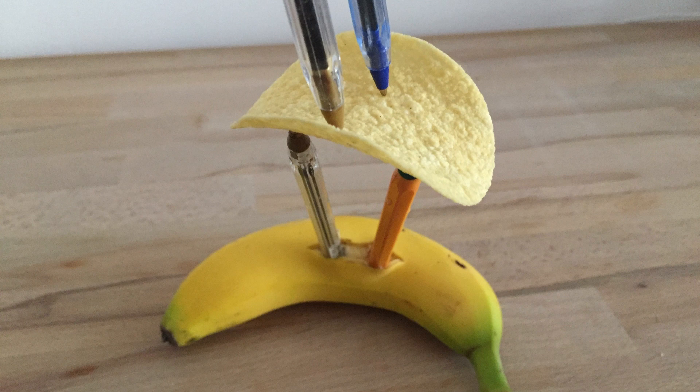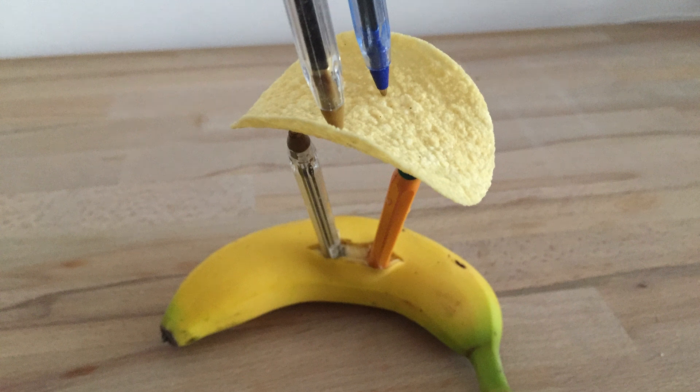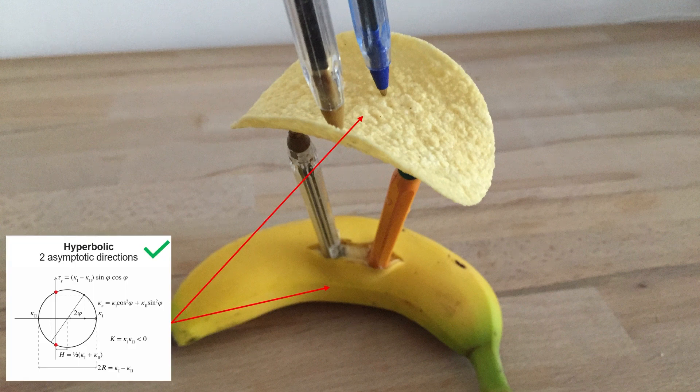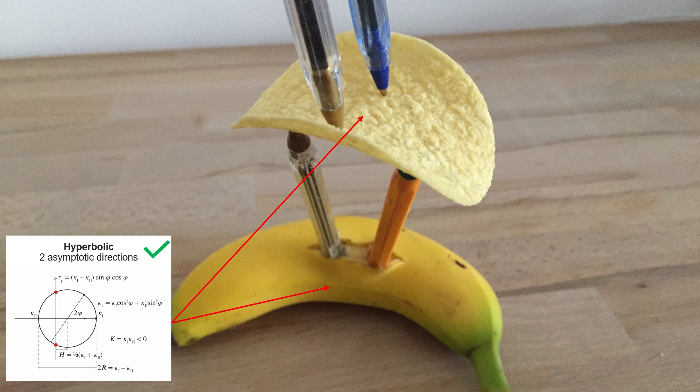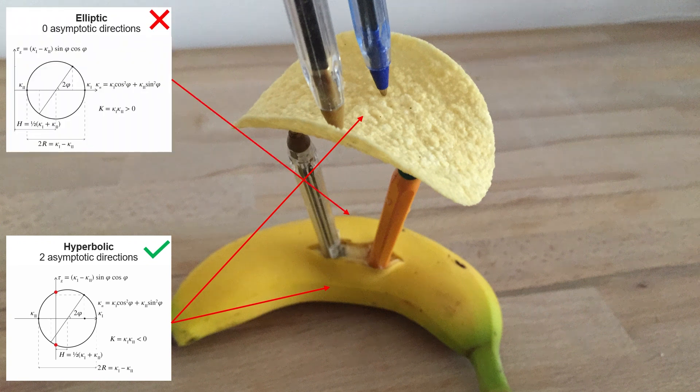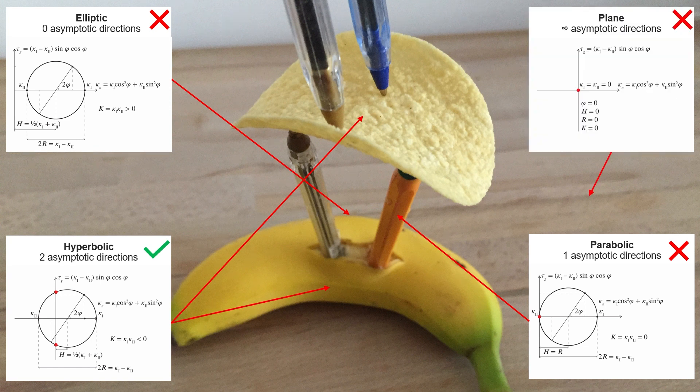So, of the objects in this picture, it applies to the entire hyperbolic paraboloid shaped crisp and parts of the banana with negative Gaussian curvature. But it does not at all apply to the parts where the Gaussian curvature of the banana is positive. Neither does it apply to the pens nor the table, since these have zero Gaussian curvature.